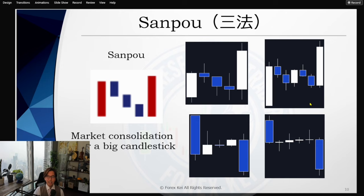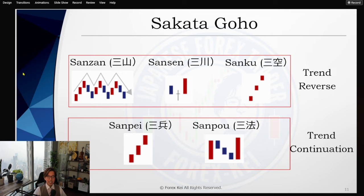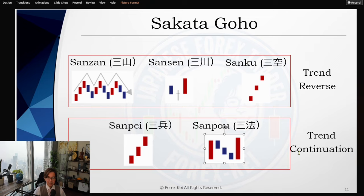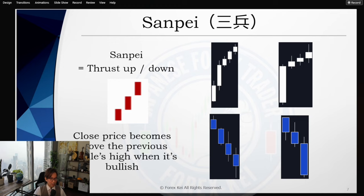I have now introduced all five patterns from the previous video series. Sanzan, Sanzen, and Sanku are trend reversal patterns, and Sanpei and Sampo are trend continuation patterns. We have to be careful when you see Sanpei and when you see the candlesticks getting smaller with wicks pointing up or down — it may be the end of the trend. So you have to be careful with those patterns.